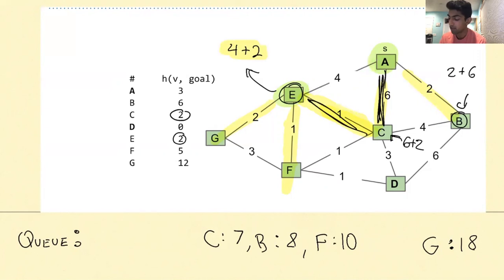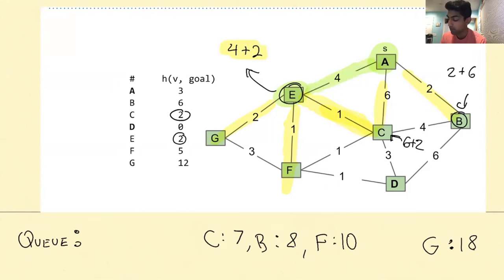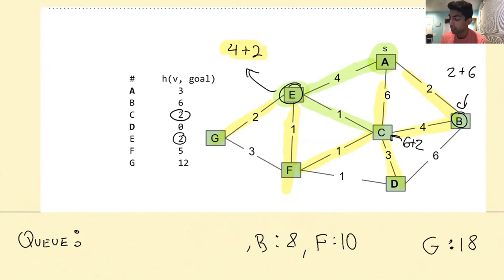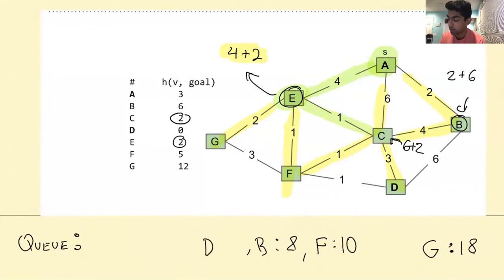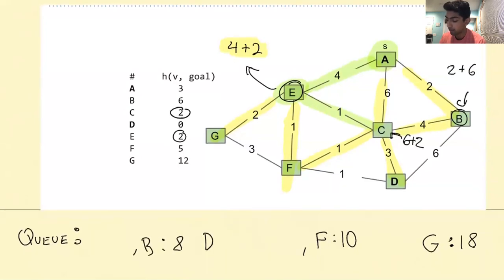With this updated priority queue, we remove the minimum, which is C. The next person we go to is C. After going to C, we learn information about its neighbors — these edges. We update the priorities: the priority of B doesn't change. D didn't exist before, so D's priority is 5 plus 3, which is 8. We also learned something about F, but it's not useful because we already found a better way to get to F via E.